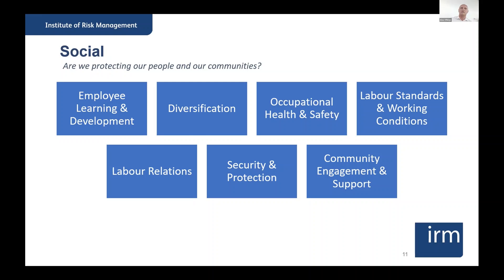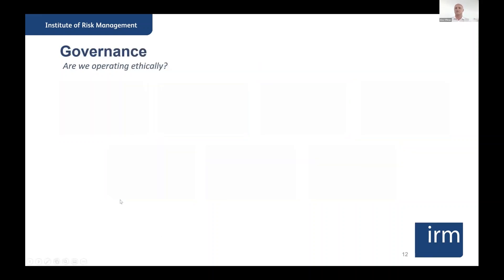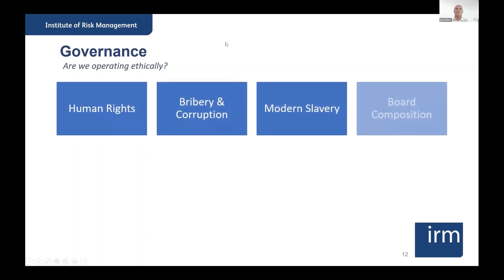We now move onto governance — always the harder one to think about when it comes to ESG, in terms of how you can actually measure and identify the key risks. I summarize this as simply: are we operating as a business ethically? These are the seven risk areas most relevant when considering the governance category.